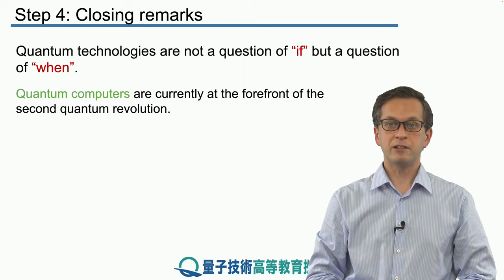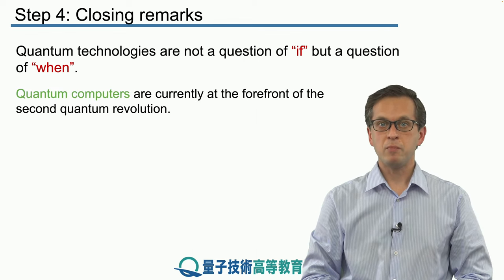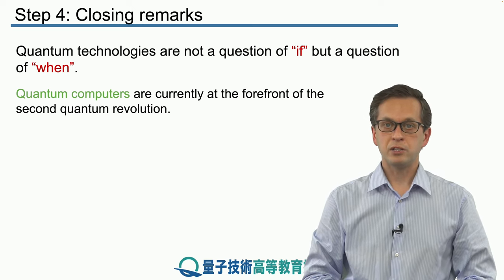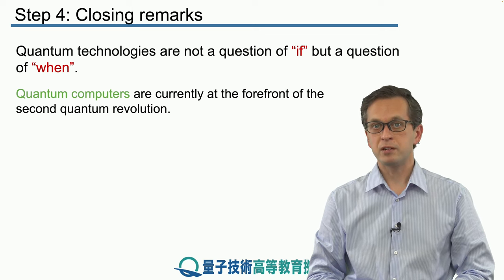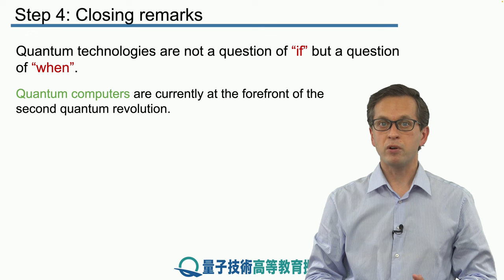Quantum computers are currently at the forefront of the second quantum revolution. Companies like IBM and Google are constantly producing devices with larger and larger numbers of qubits of better and better quality, allowing us to perform computations which are more and more complicated.